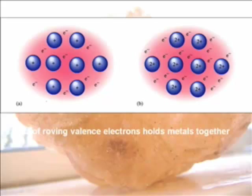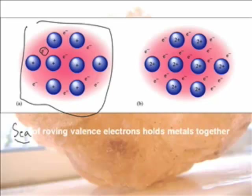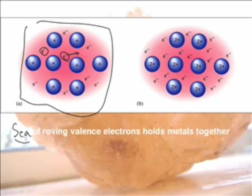A sea of roving valence electrons holds metals together. These valence electrons, in a bunch of metal atoms all hooked together, are free to move — they just kind of randomly move from one atom to the next. It's kind of like a commune, where it's not your stuff or my stuff, it's our stuff. This electron does not belong to this atom — it belongs to all of the atoms.